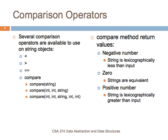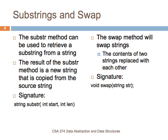There are also substring methods. The substring methods can be used to get a substring from a string. You can also do some swapping of strings and substrings. The swap method will swap the contents of two strings with each other. The signature for swap is: you have a string, you use the swap method, you pass in another string, and then the contents of the string you operated on will be replaced by the input.